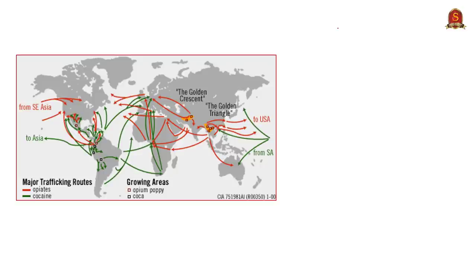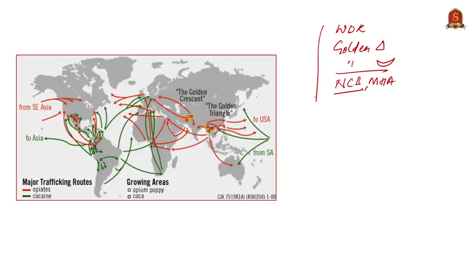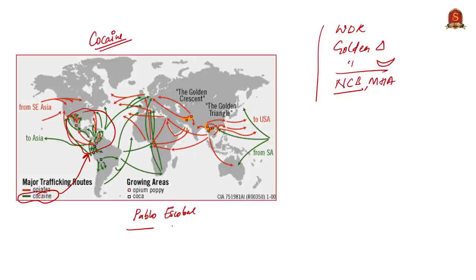So we have discussed the World Drug Report, Golden Triangle, Golden Crescent, why Asia is the biggest producer as well as biggest consumer for opiates, and the Narcotics Control Bureau under the Ministry of Home Affairs. Before moving to the next part, let us have a small discussion about cocaine. Cocaine is one more narcotic substance mainly produced and consumed in North America as well as South America. The cocaine-producing mafias in Colombia almost ruled the state. One prominent name here is Pablo Escobar, considered the drug lord of cocaine and Colombia.